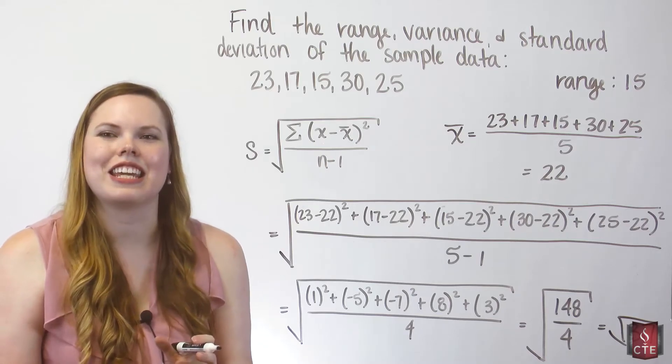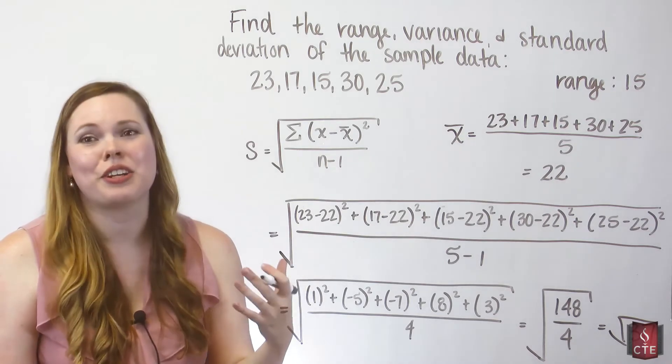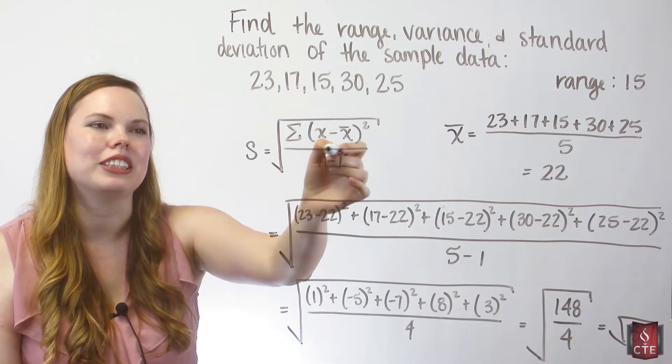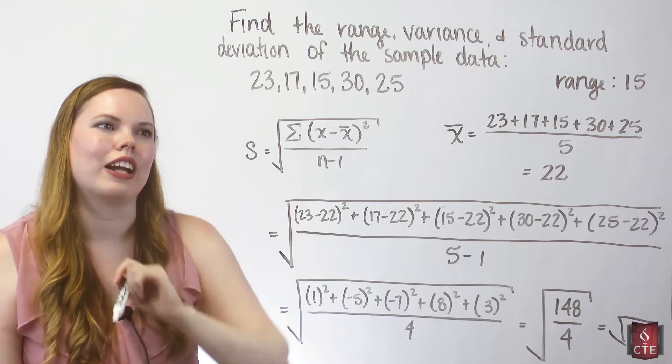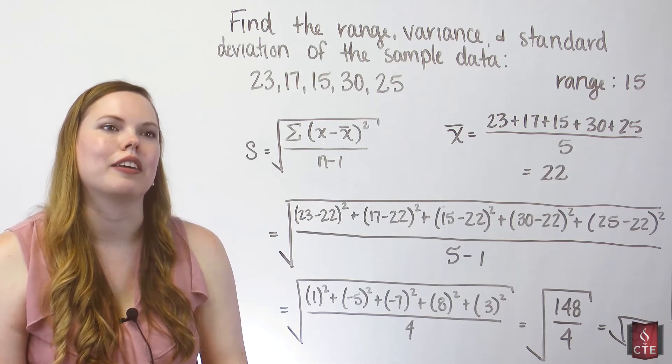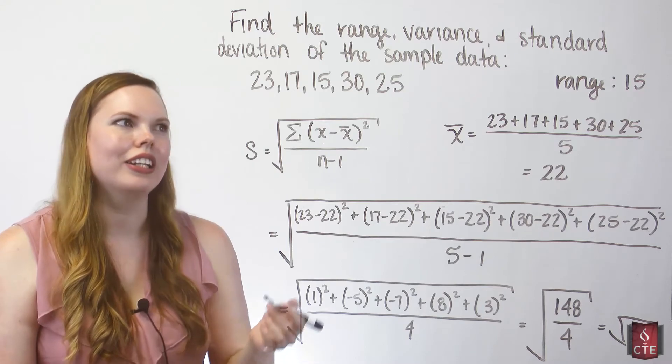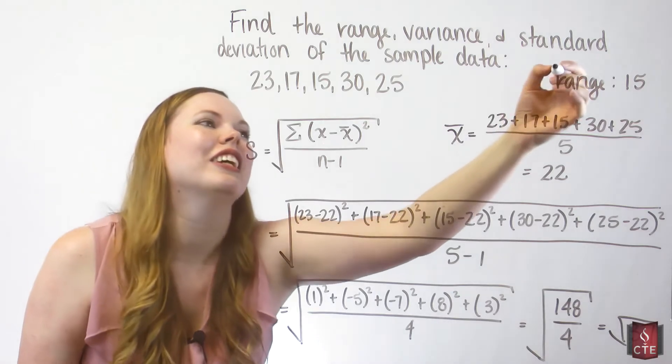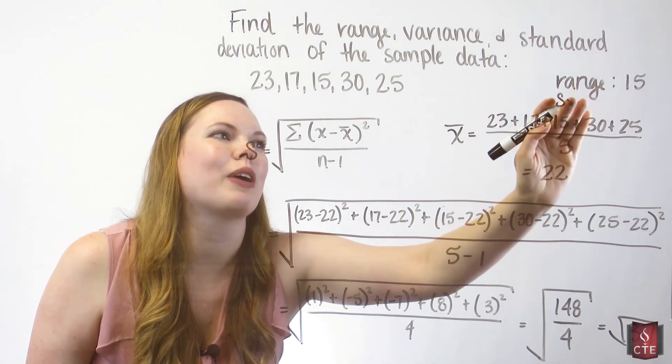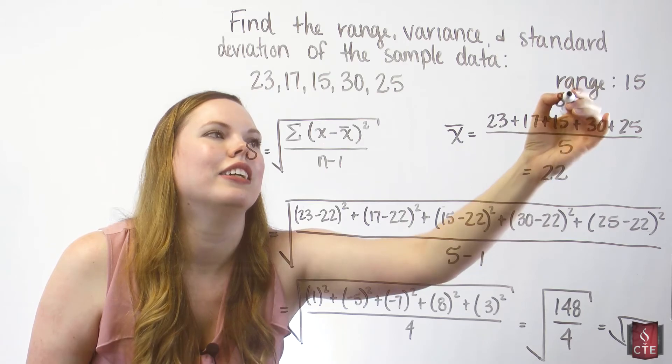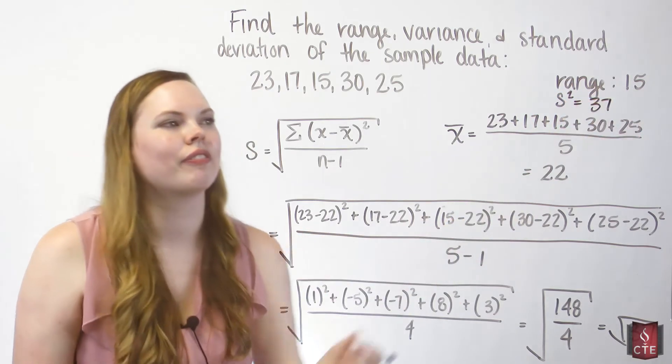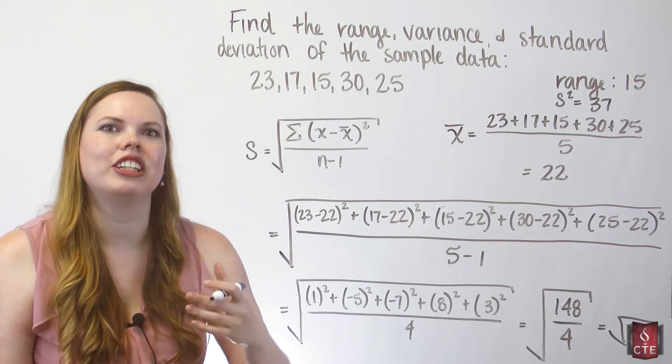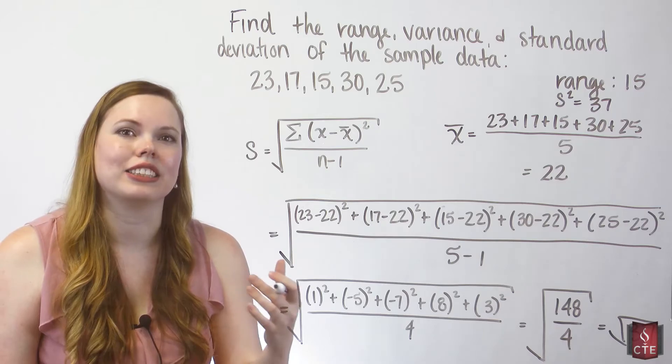The variance is the standard deviation before you take the square root. The variance is actually just the sum of the x's minus the mean divided by n minus 1. So it is denoted by s squared. So our variance is 37. Before we take the square root, it's 37.